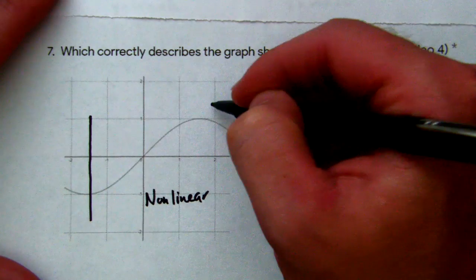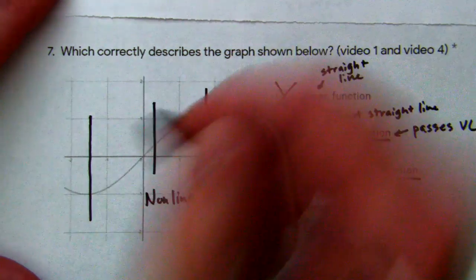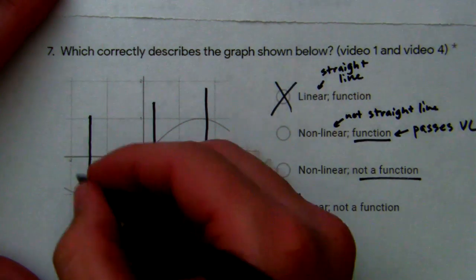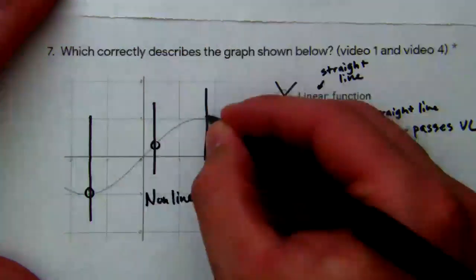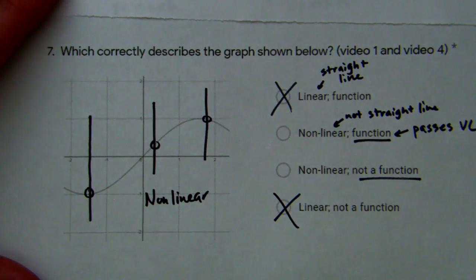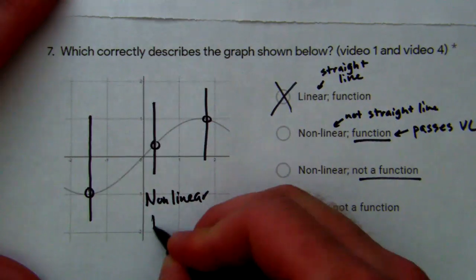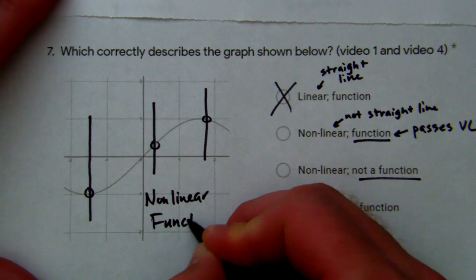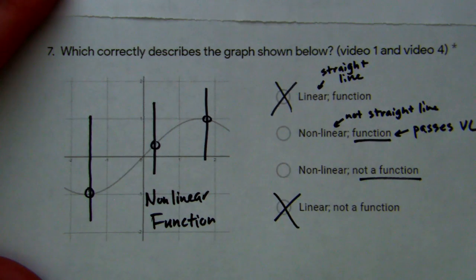We draw a vertical line through multiple points in our graph. If it only hits once on each line, which it does, then we know this is a function because it passes the vertical line test.